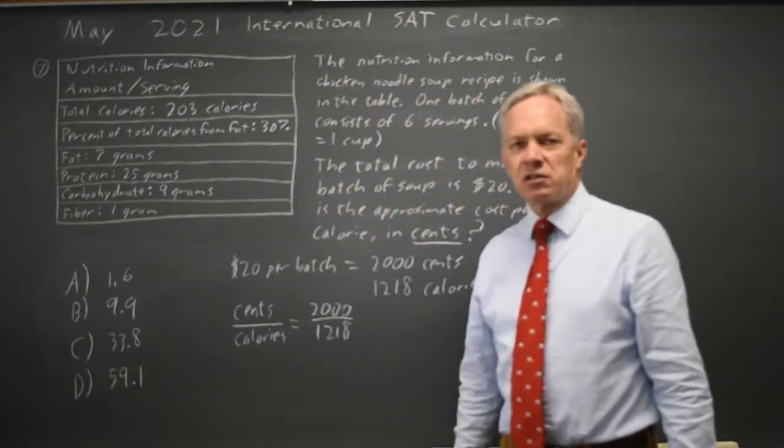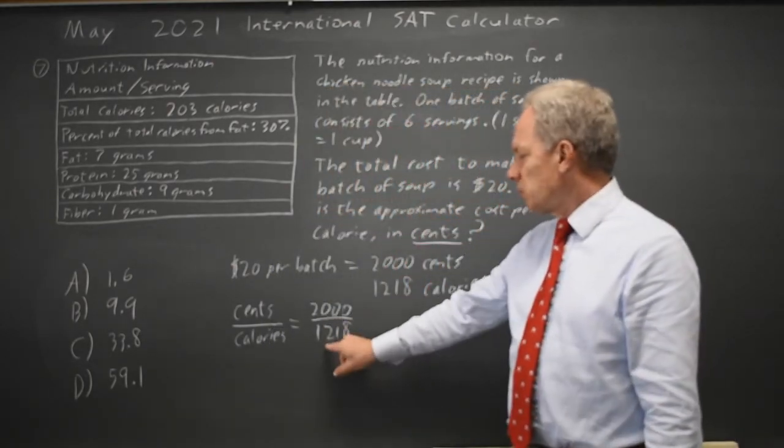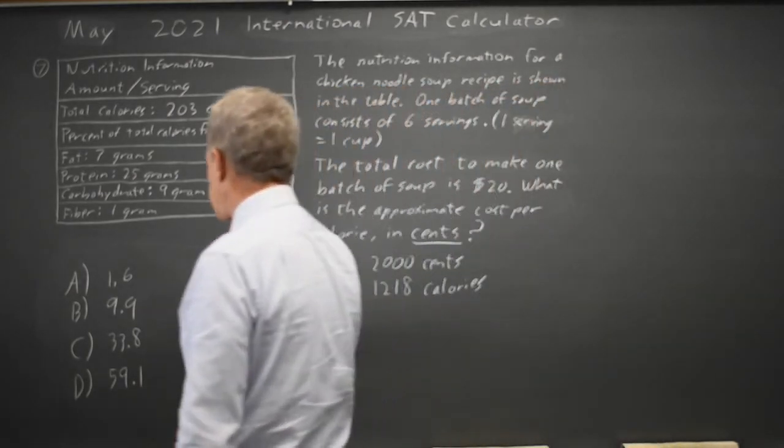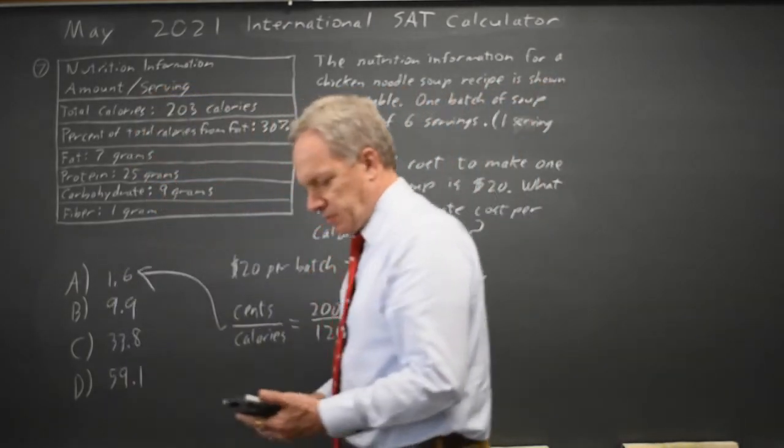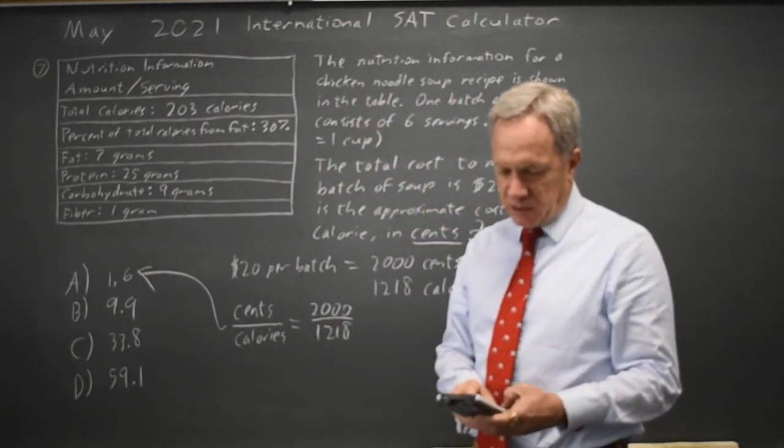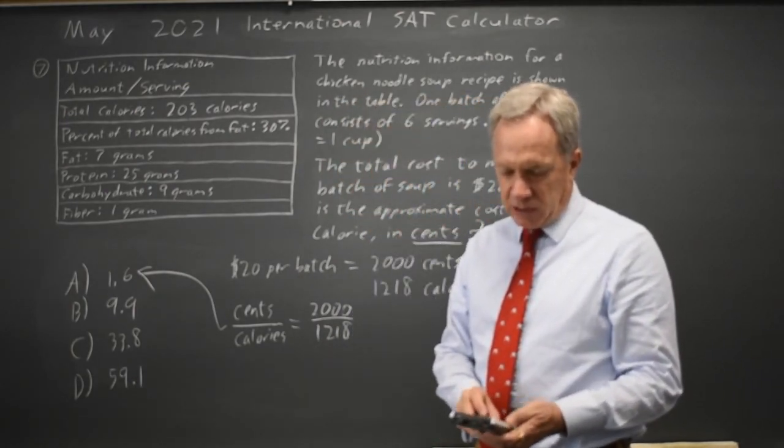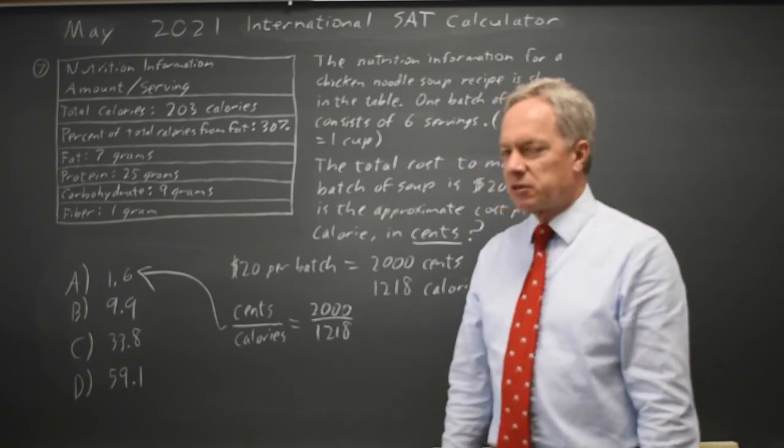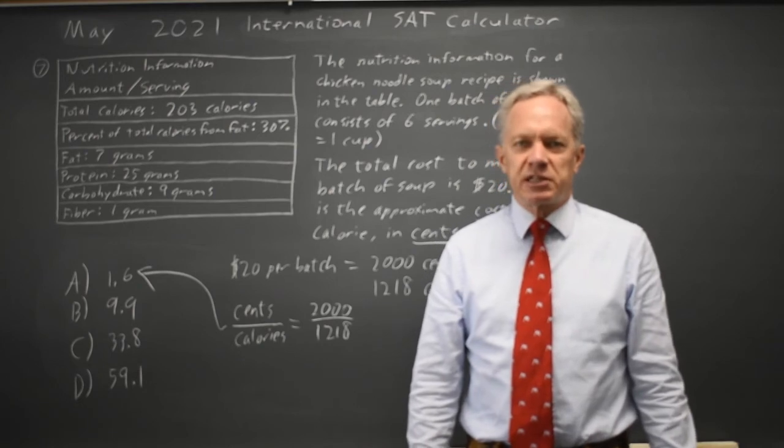I can do that on my calculator, but since 2,000 is more than 1,218 but less than twice as much, we know that's going to end up as 1.6. Let's try that. 2,000 divided by 1,218 is 1.64 cents per calorie, so choice A is the correct answer.